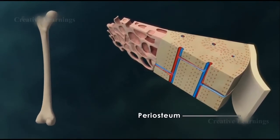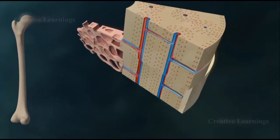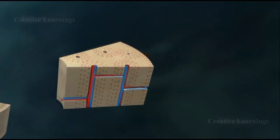Inside this periosteum is a thick layer of cortical bone, commonly referred to as compact bone.